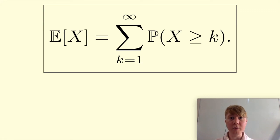Okay, so we're going to have a look at this really nice formula for the expectation of a discrete random variable, where you can write it as the sum over k, the probability that it's greater than or equal to k.